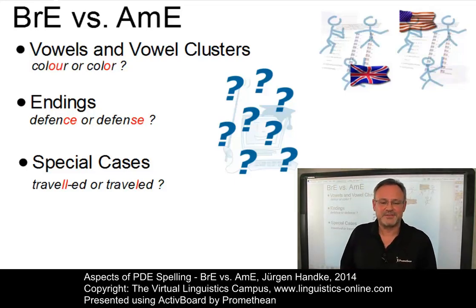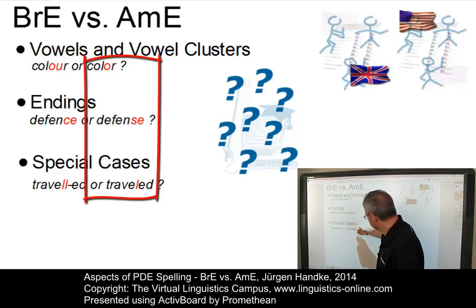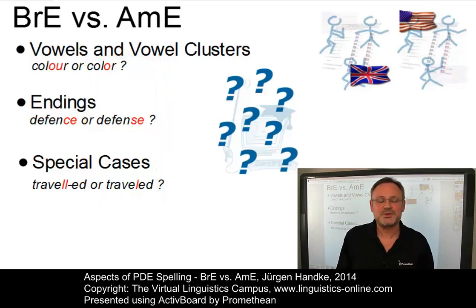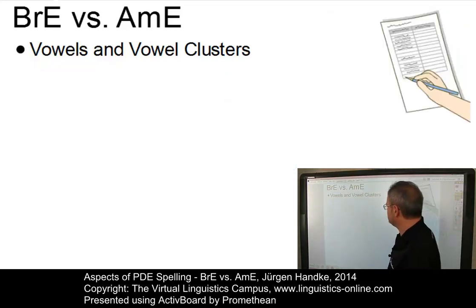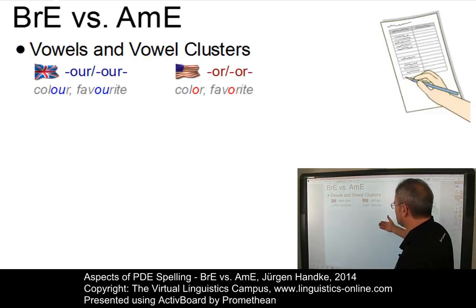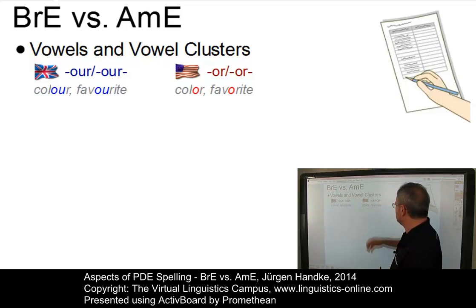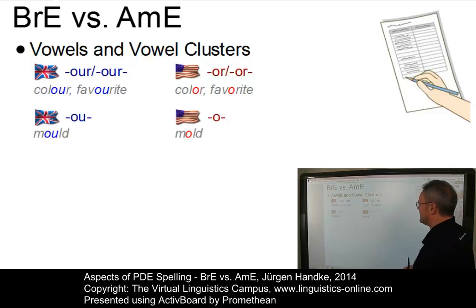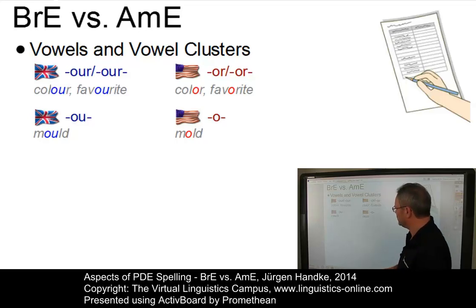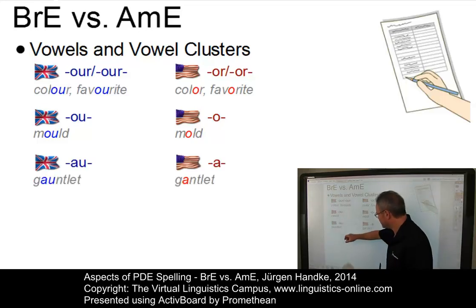You may have already found out that the American variant is always the one represented on the right-hand side. Let us look at these differences in more detail, starting with the vocalic differences where vowels and vowel clusters are involved. For example, we have the choice between OUR and just OR in American English: British English uses OUR as in 'colour', American English uses OR as in 'color' and 'favorite'. Or take 'mould' with OU in British English, but just with an O in American English. And 'gauntlet' in British English is spelled just with an A in American English.